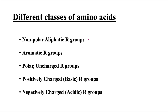These groups include amino acids containing non-polar aliphatic R groups, aromatic R group-containing amino acids, polar uncharged amino acids, positively charged or basic R group-containing amino acids, and negatively charged acidic R group-containing amino acids.